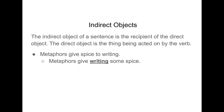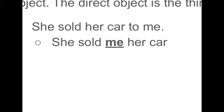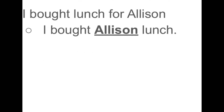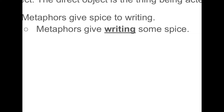One more example: metaphors give what? Spice. Here it's an object of a preposition referring to the preposition to, but if we move it over and drop the preposition — what do metaphors give? Spice. What do they give it to? Writing. So the indirect objects were me, Allison, and writing.